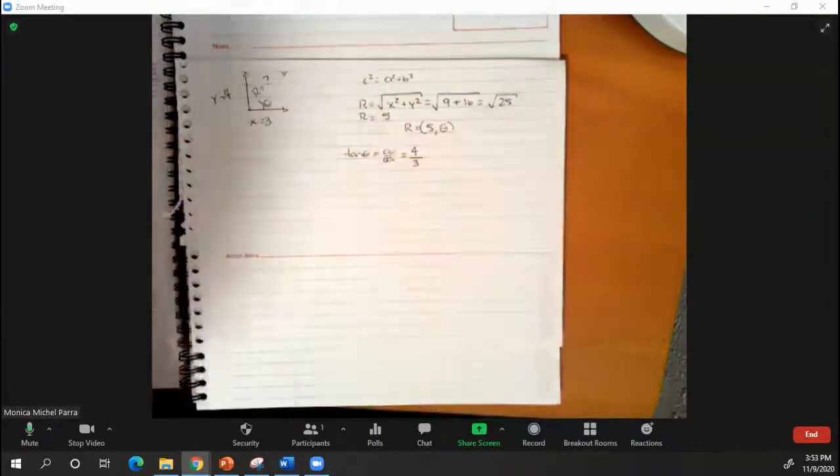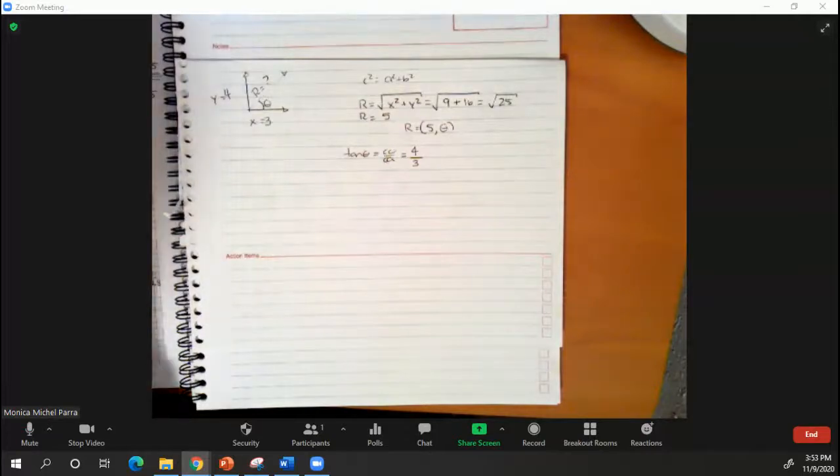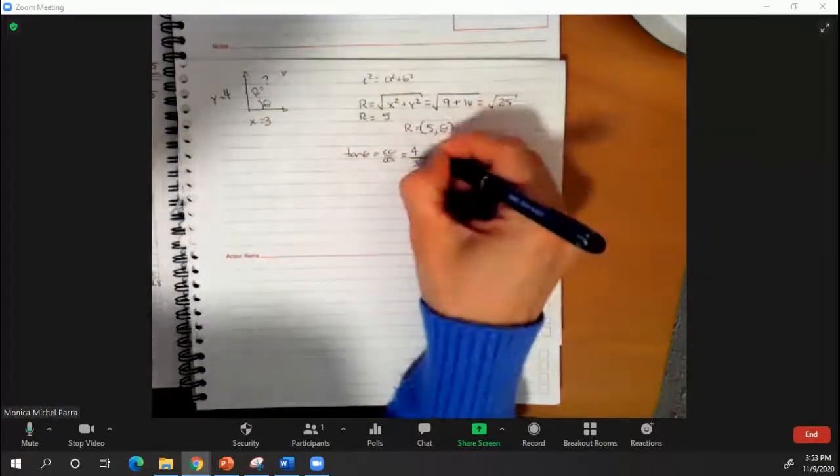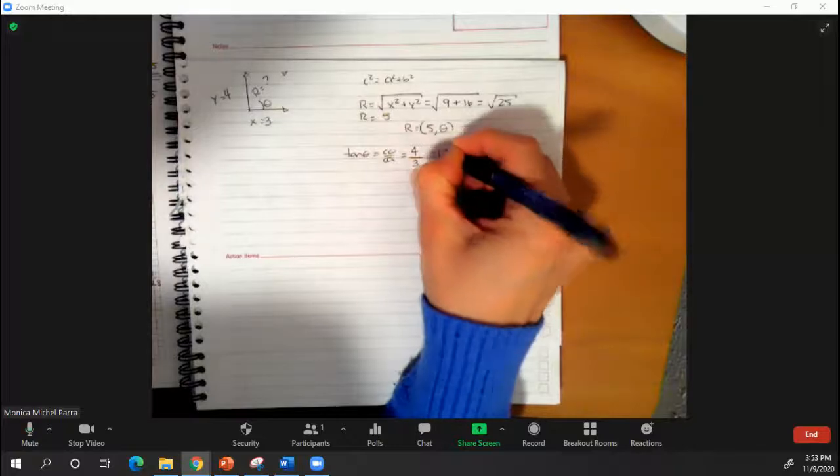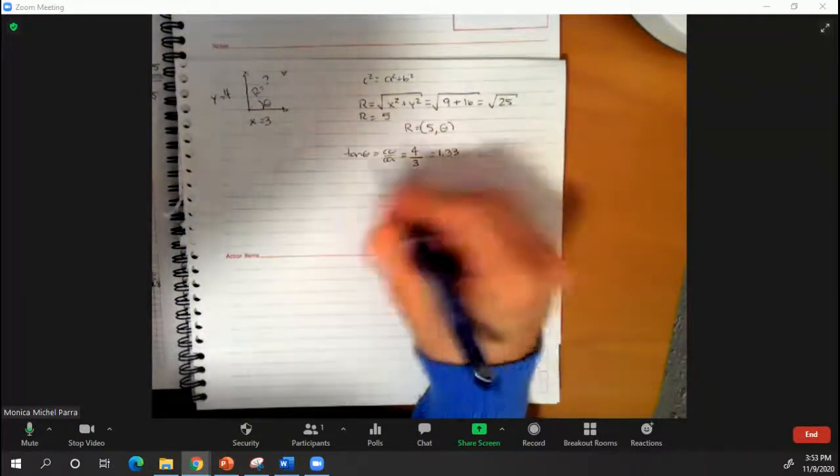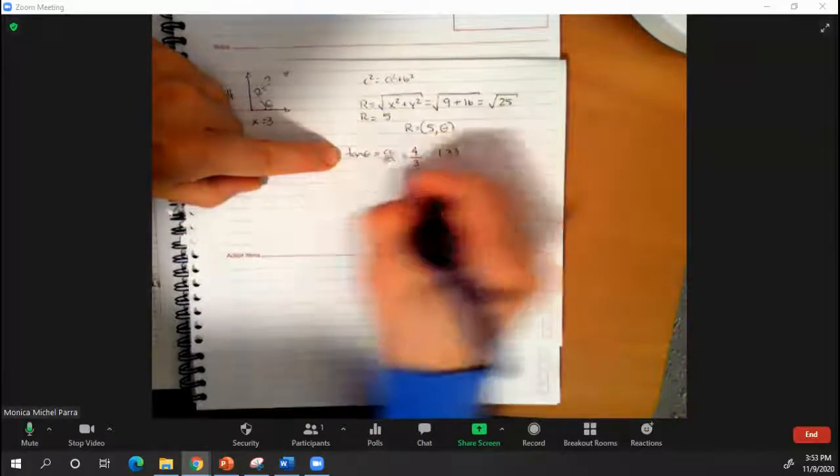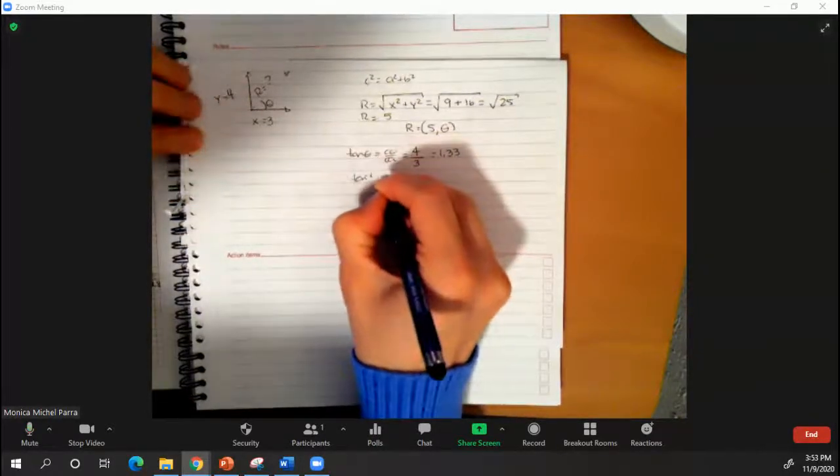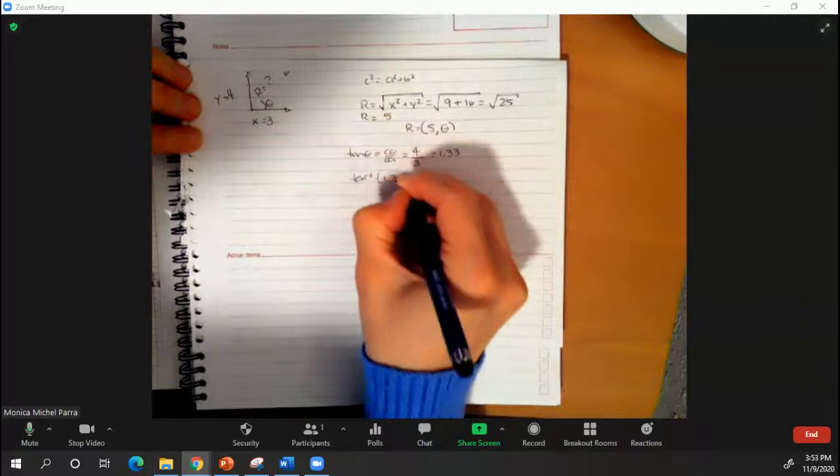When I do the division 4 over 3 I will get 1.33 but this is still not the angle. This is the tangent of the angle. So I need to do tangent to the minus 1 of 1.33.